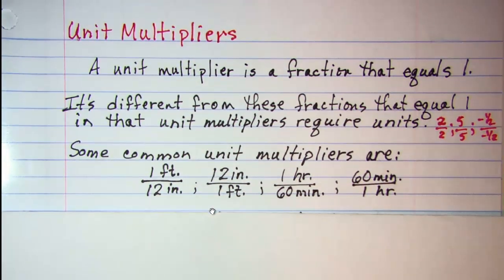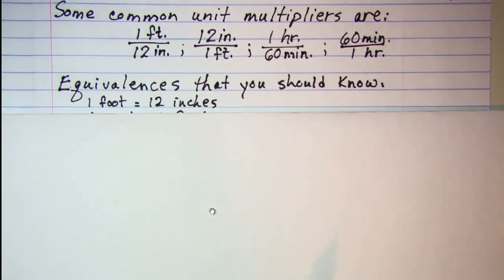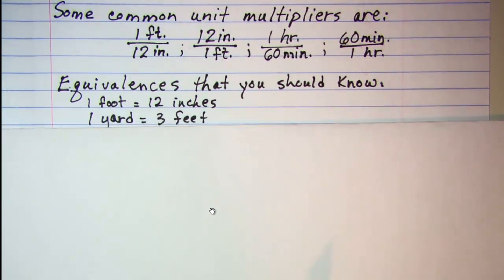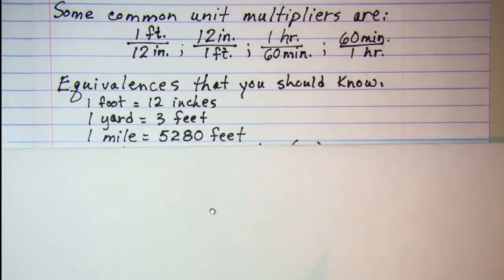Some equivalences that you should know: one foot equals 12 inches, one yard equals three feet, one mile equals 5,280 feet. And then our metric system.